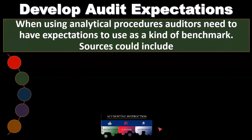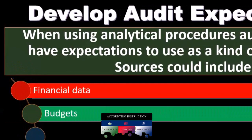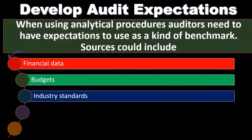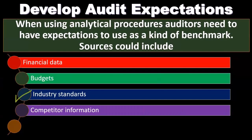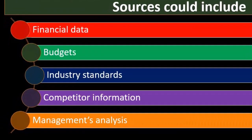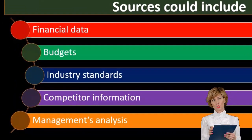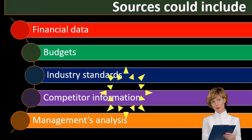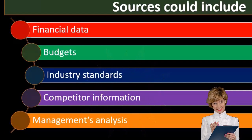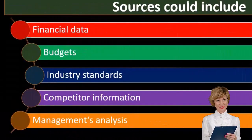The question would be, how do we come up with these expectations? The sources of the expectations could come from financial data, from budgets, from things like industry standards. We might take the industry standard as benchmarks. Competitor information might help serve as a benchmark, and management's analysis is what we may use for the benchmarks. Then we can run those analytical procedures — those ratio-type procedures.